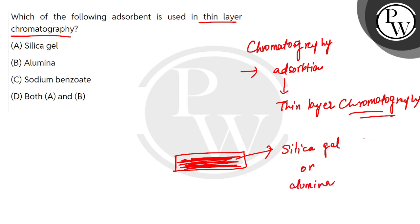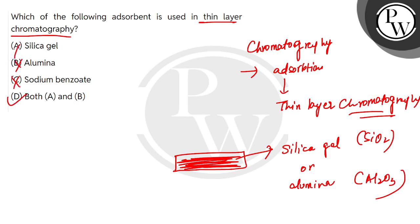Silica gel is nothing but SiO2 paste, and alumina is Al2O3 paste. So these two adsorbents — both A and B — can be used, making option D correct. The rest of the options are incorrect. I hope you understood, thank you.